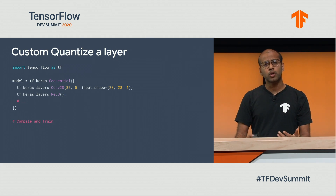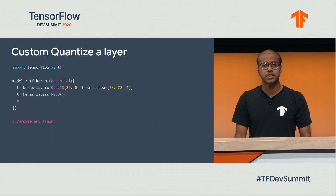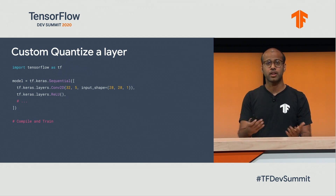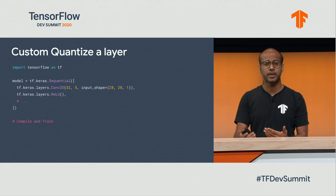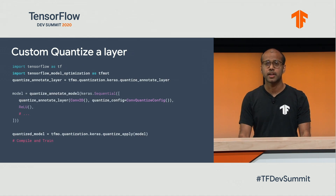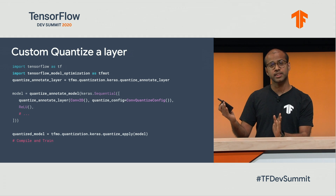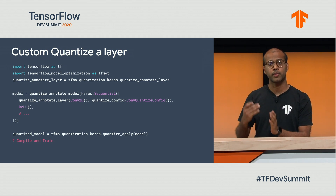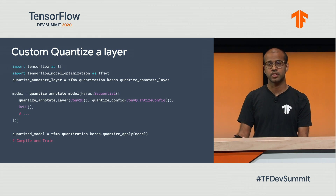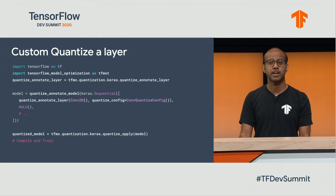Beyond that, you might want to control the quantization within a layer — for example, you have a particular layer but you want to control which weights to quantize and how. In that case, it's a similar API: you use quantize annotate layer, but when you pass in the layer, you also pass in a specific config. This config tells the infrastructure how to actually quantize that layer. The rest of the API remains the same.